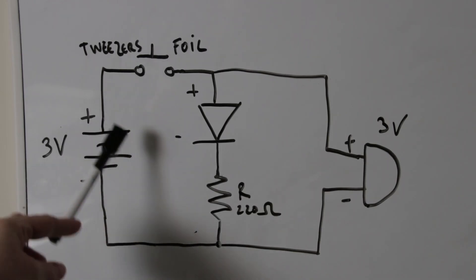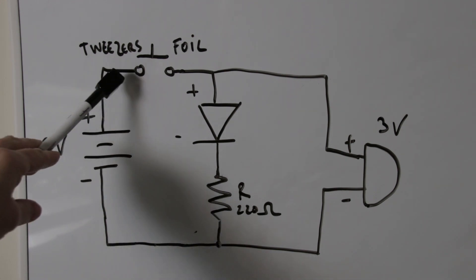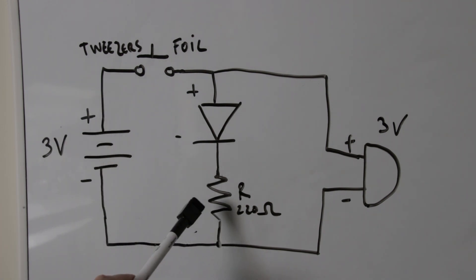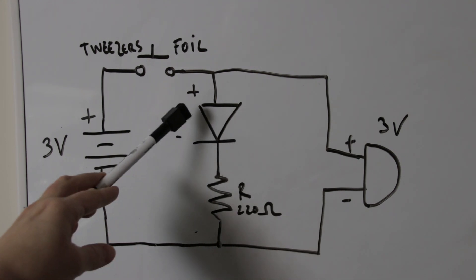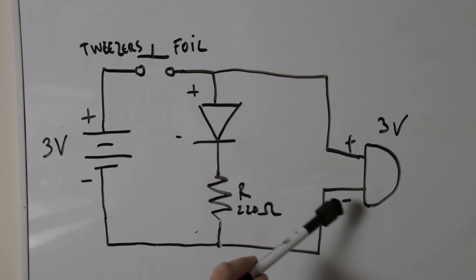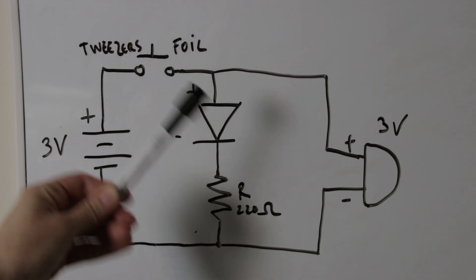My circuit will be as follows: a 3 volt battery will be connected to the tweezers from the positive side. The negative side of the battery will connect to the resistor on a breadboard. The other end of the resistor will be connected to LED negative. LED positive will connect to the foil. The buzzer will be connected in parallel. When the tweezers make contact with the foil, the circuit will close.